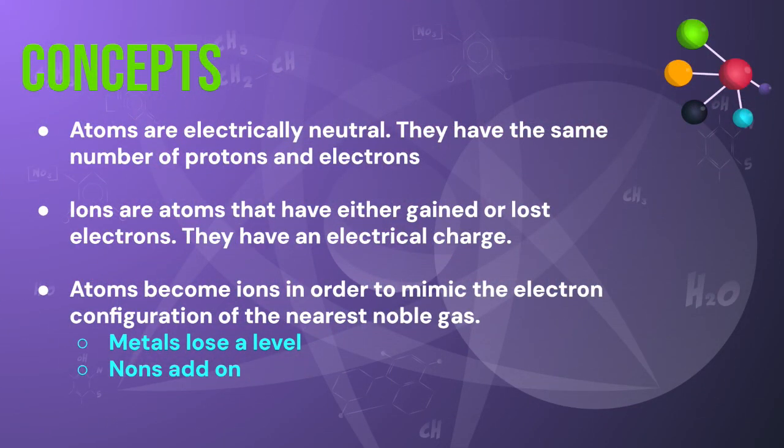Let's review some concepts that we covered in today's lesson. Atoms are electrically neutral. This is because they have the same number of positively charged protons as they do negatively charged electrons. When we use the word ion, we're referring to an atom that has either gained or lost electrons. And because of this, they have an electrical charge. Now, why do atoms turn into ions? Well, it has to do with stability. More specifically, they want to have the same electron configuration of the nearest noble gas.